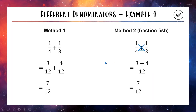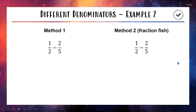If you're confident with fractions you might find Method 1 really easy. If you're struggling a bit, I recommend using the fish to help you out. Let's try a couple more examples. This one is a subtraction: 1 half take away 2 fifths. If you feel like you're getting it, pause and have a go — otherwise I'll dive straight into the solution.